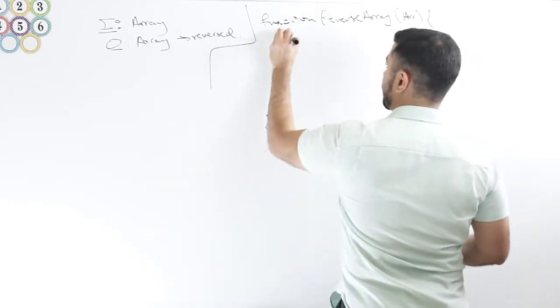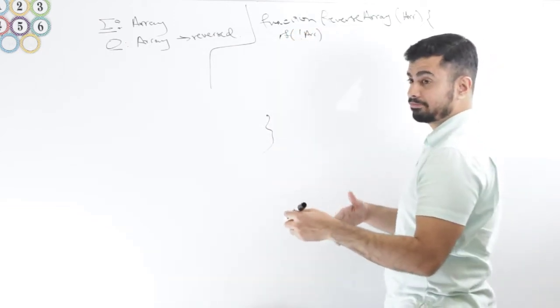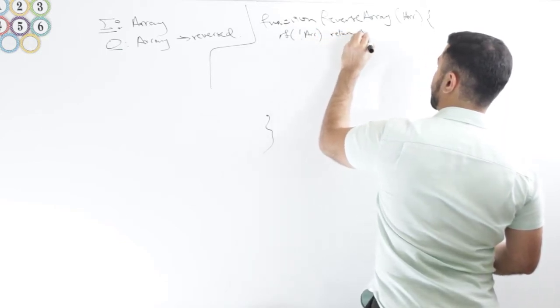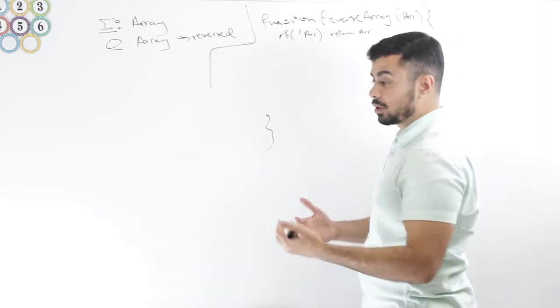So I will say if not array, so basically if array is a falsy value, return array. Now let's go into the meat of the logic.